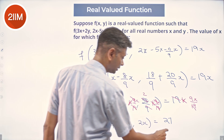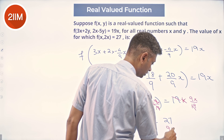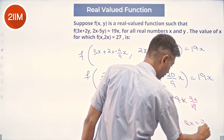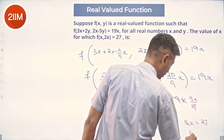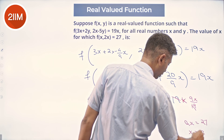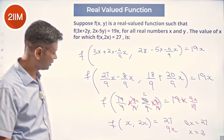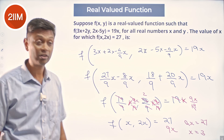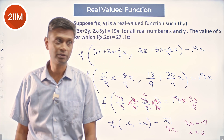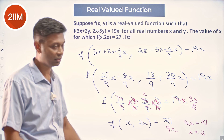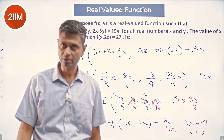Reframing that equation: f(x, 2x) = 9x. So 9x = 27, which means x = 3. Therefore f(3, 6) = 27. Plug it back and this will be satisfied.